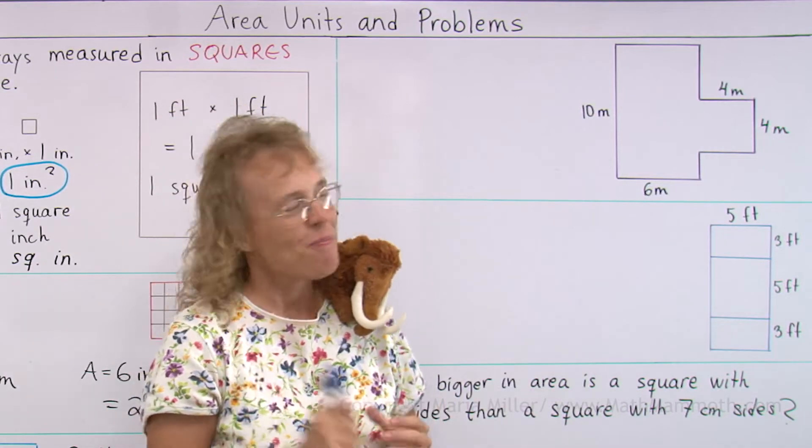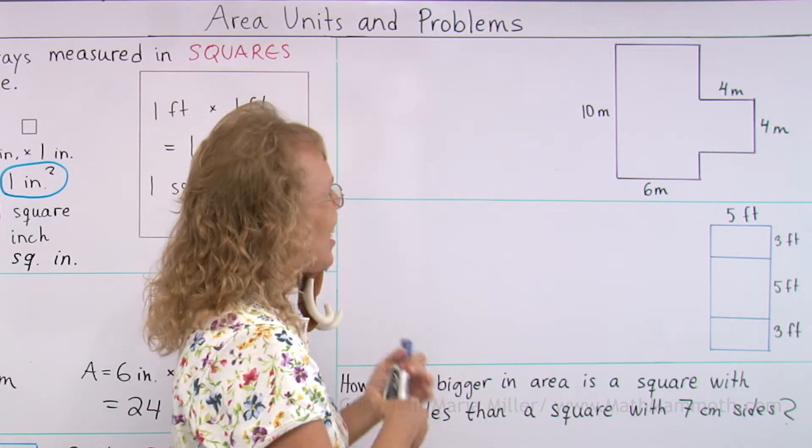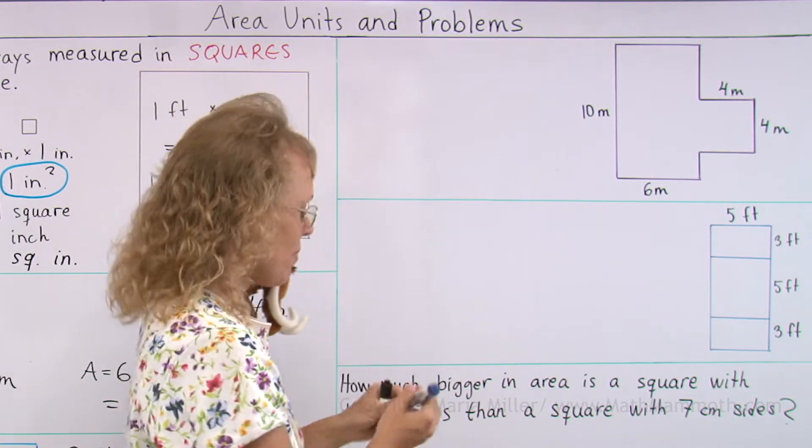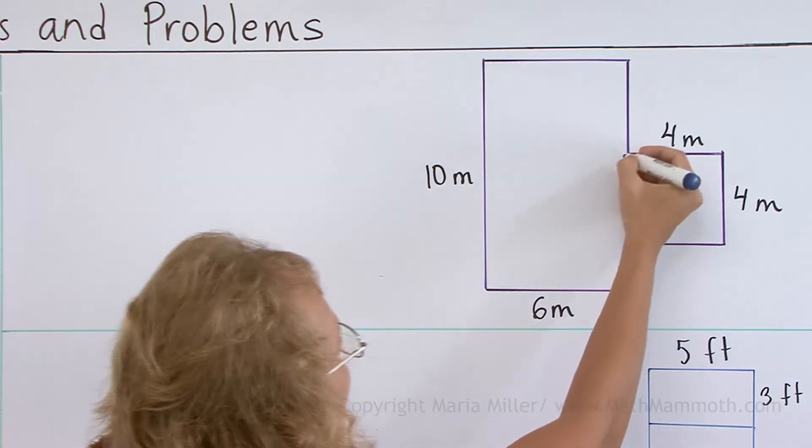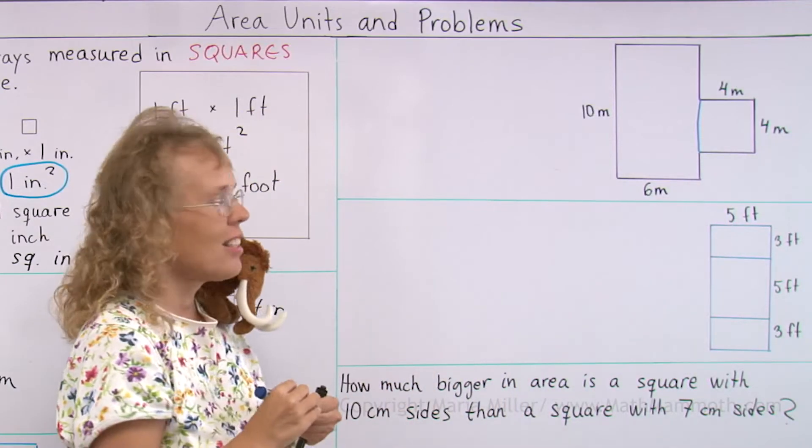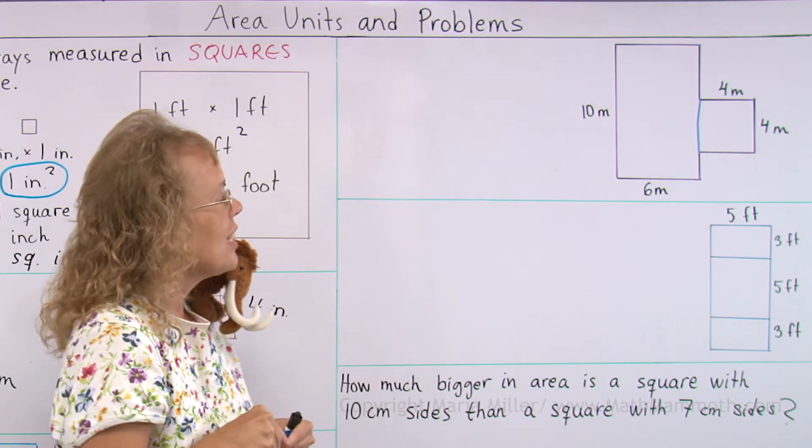We need to find its area. And the idea is that we will divide this shape into rectangles, for example, like this. So now I have two rectangles, right? And then I find the area of each separately.